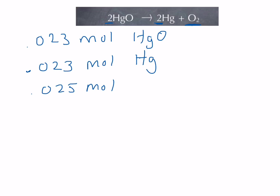So we have 0.023 moles of mercury oxide. We can multiply by our ratio here. And we get 0.0115 moles of oxygen.